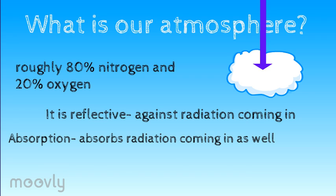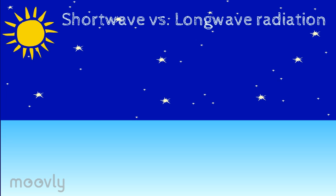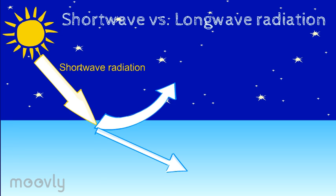The gases in our atmosphere work to create a greenhouse effect, a way of keeping the Earth warm after the sun goes down. The sun emits short-wave radiation towards the Earth. When that radiation hits the Earth's atmosphere, about 35% of it is immediately reflected back into space, and the rest continues into the atmosphere. As the radiation travels through the many layers of our atmosphere, another 17% is absorbed.